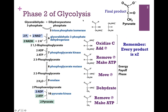Remember, our final product will be pyruvate. We're starting with glyceraldehyde-3-phosphate. In the first step, we're going to oxidize carbon number one and add a phosphate. In Step 7, we're going to remove that phosphate to make ATP. In Step 8, we're simply going to move the phosphoryl group from carbon-3 to carbon-2. In Step 9, we dehydrate the molecule. And in our final step, we remove that last phosphate to make ATP. What we have illustrated here are the substrates, products, and enzymes for each step for a single reaction. But remember, our products from Phase 1 were two molecules of glyceraldehyde-3-phosphate, so our products have to be multiplied by two if we want to indicate the energy gain from one molecule of glucose.